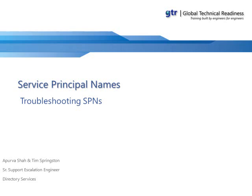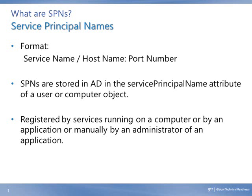Service principal names are a critical piece of how Kerberos authentication works, and in order to know how to troubleshoot Kerberos issues, it is important to fully understand what a service principal name is. Service principal names, commonly referred to as SPNs, are used by domain controllers to match a published service to a security principal. That security principal can either be a user or a computer.